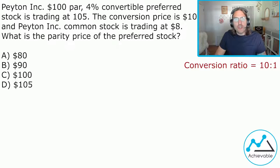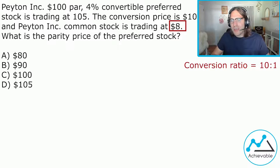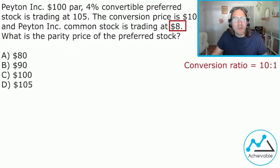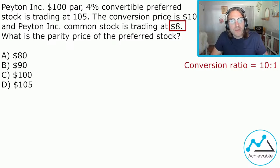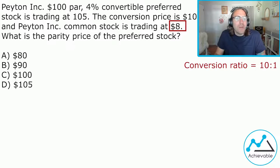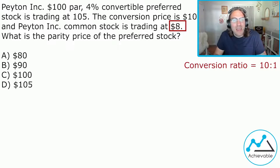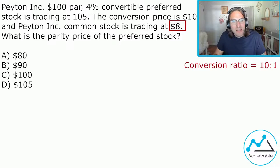Payton Inc. common stock is trading at $8. Knowing the market price of the common stock is important for the investor — it will tell the investor if it's worth it to convert into the common stock. Let's say the investor bought the preferred shares for $100. They probably don't want to convert into less than $100 of common stock. Would it make sense to buy $100 preferred stock shares and then convert into, say, $60 of common stock? Probably not.